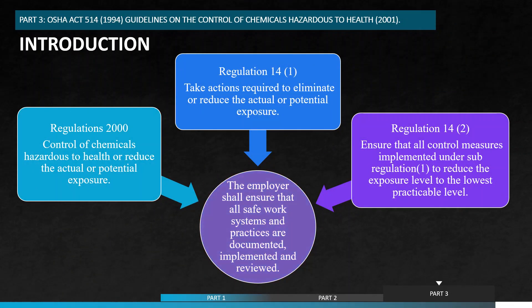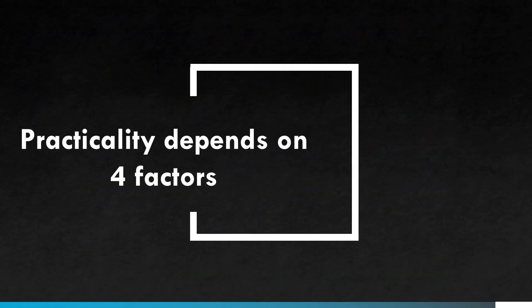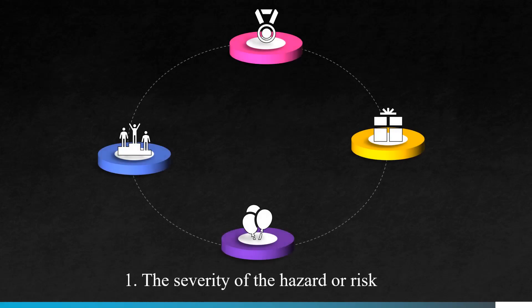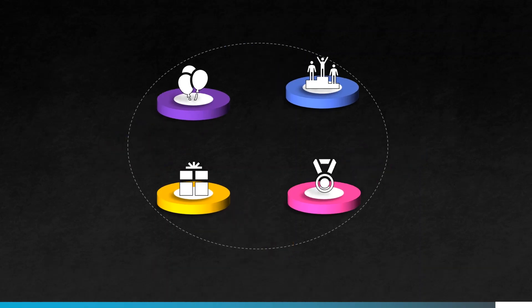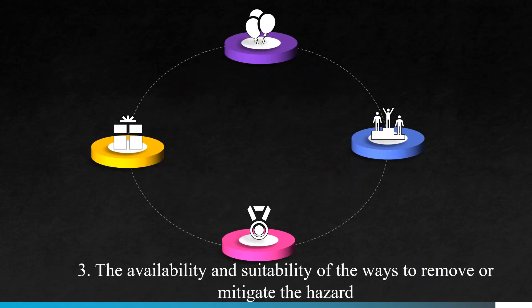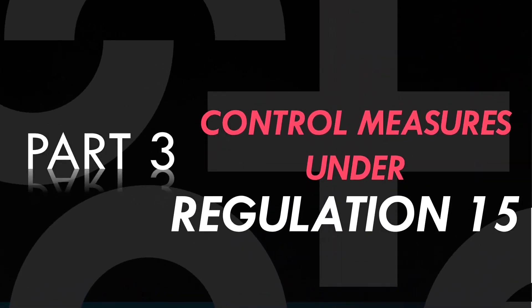These are the regulations under OSHA Act 514. The four principles that relate to the method to control hazards are as follows. The practicality of guidelines depends on four factors: number one, number two, number three, and the last one.